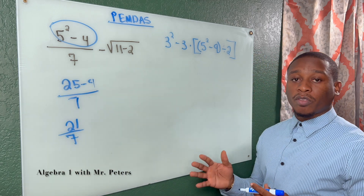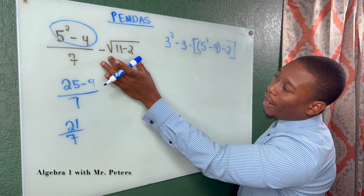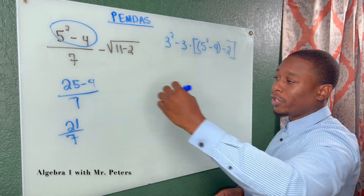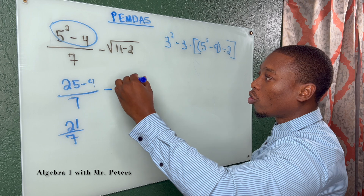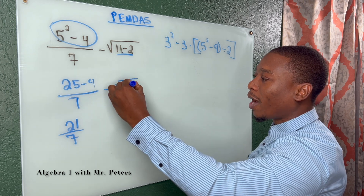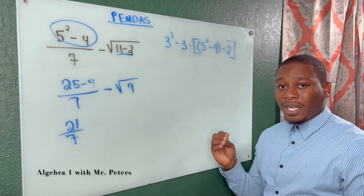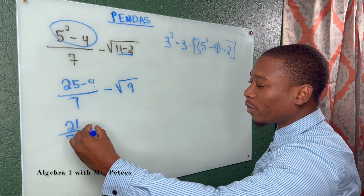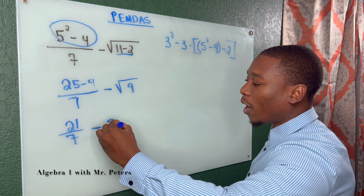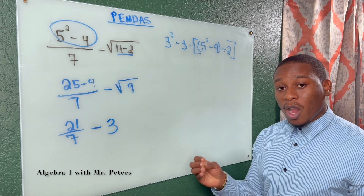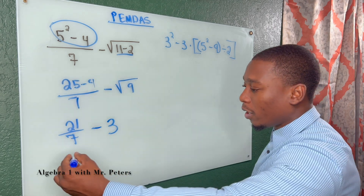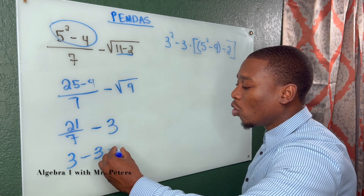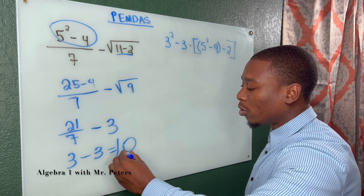Now the second part of the problem, we're going to subtract the difference of radical 11 minus 2. After we simplify this, we're going to get 9. Remember that 9 is a perfect square. So we're going to have 21 over 7 minus the square root of 9, which is 3. Now when we simplify by dividing, we're going to get 3 minus 3, which gives us 0.